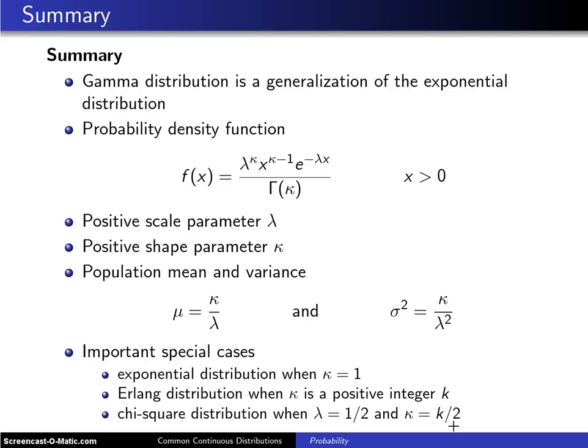In the example just finished on the previous slide, the Erlang distribution and the Poisson distribution—a continuous distribution and a discrete distribution—were used to solve that particular problem.